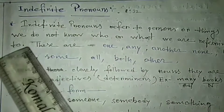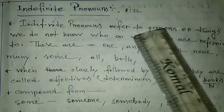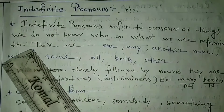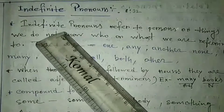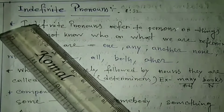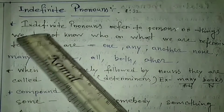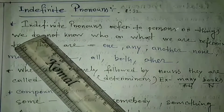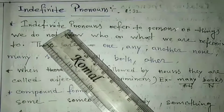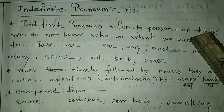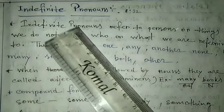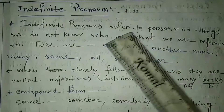Indefinite pronouns refer to persons or things we do not know who or what we are referring to. Indefinite means, as we can understand by the meaning of this word, it is actually denoting to a thing or a person which is not in particular or which is non-specific. That means this kind of pronoun is actually used for a person or a thing which is unknown to us, which is not known to the person who is using this pronoun.